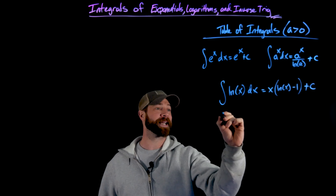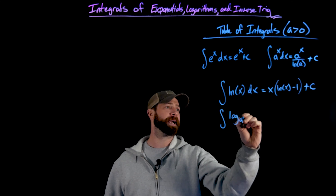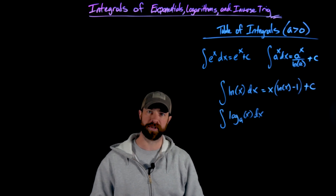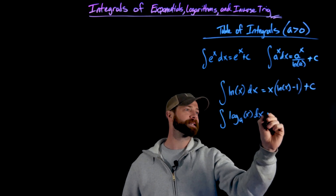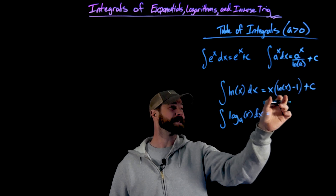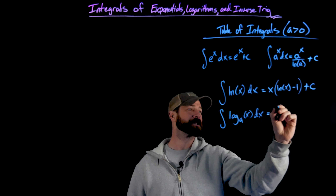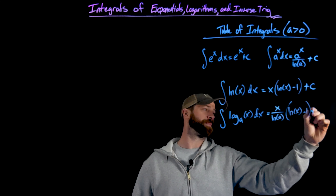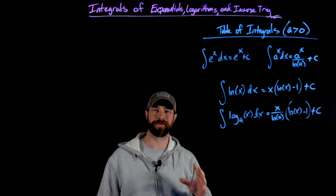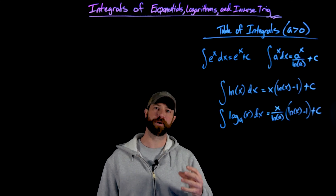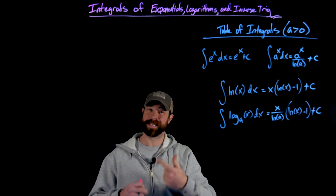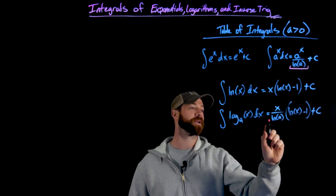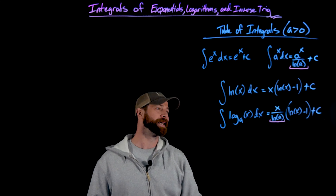In the same way, if we take the integral of log base a, where a is strictly a positive number, the result is very similar — it's x over the natural log of a, times the natural log of x minus 1, plus c. These are four important integrals, but really focus your energy memorizing the natural exponential and the natural log, then know that in each case you're just dividing by the factor of natural log of a for the non-natural base.